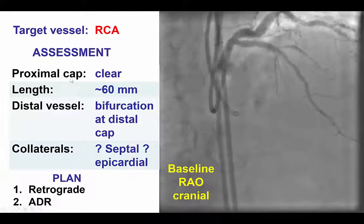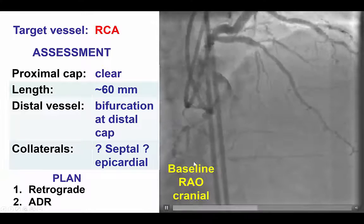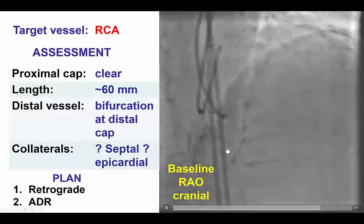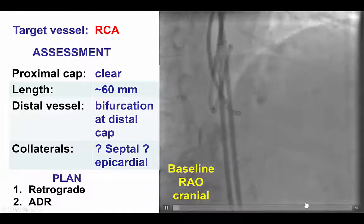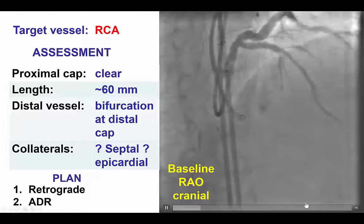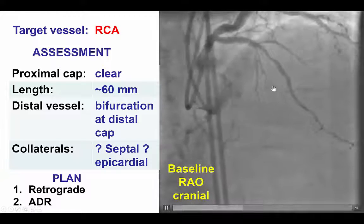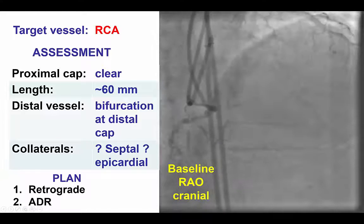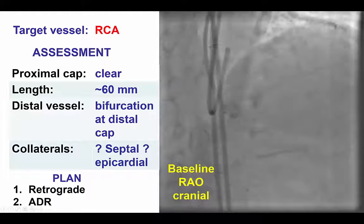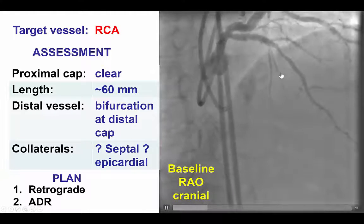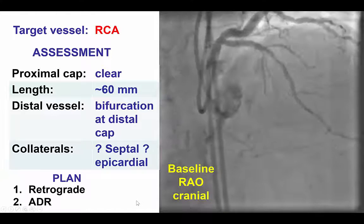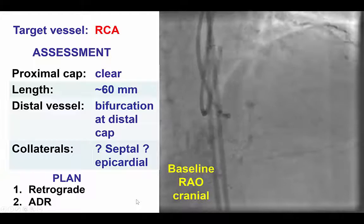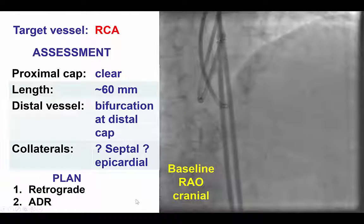This was a patient with a clear proximal cap, a fairly long CTO of approximately 60 mm, a bifurcation of the PDA and PLV in the distal cap, and then unclear collaterals — potentially septal or epicardial. The plan was to attempt a retrograde approach first if the septal collaterals were found to connect with the PDA, followed by antegrade dissection reentry if that failed to achieve success.